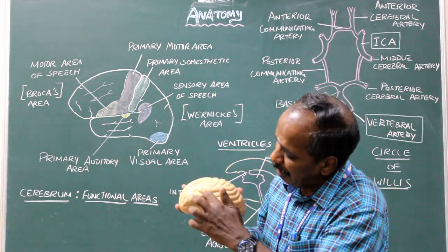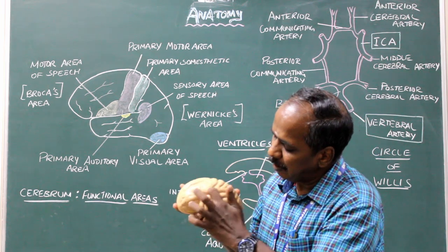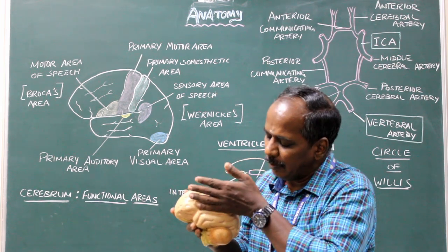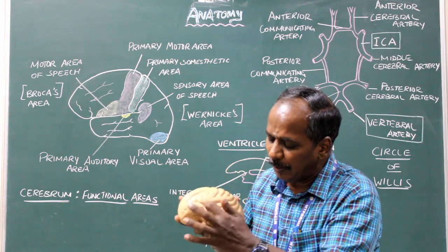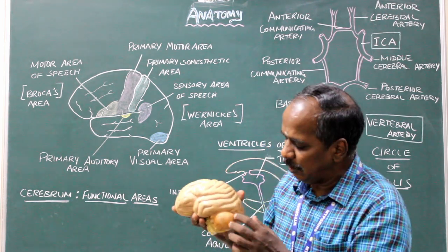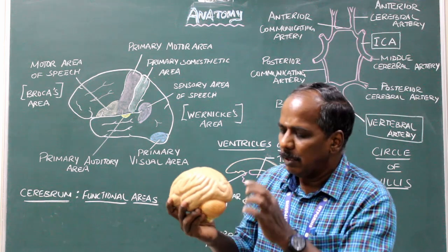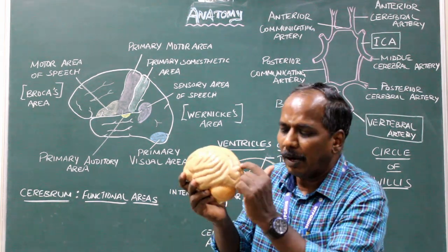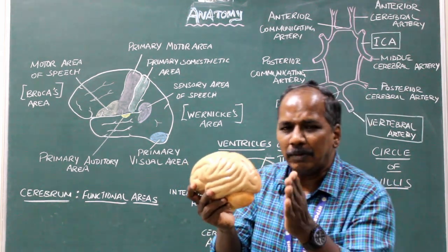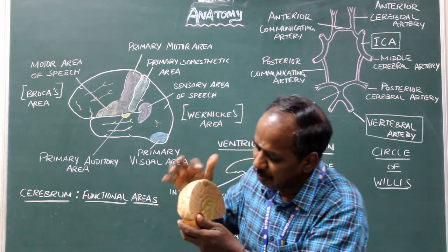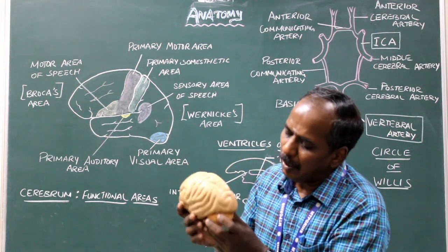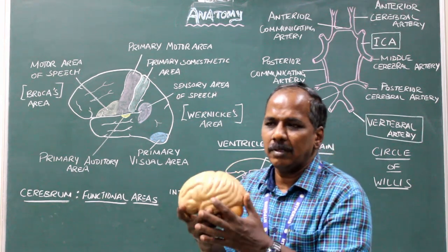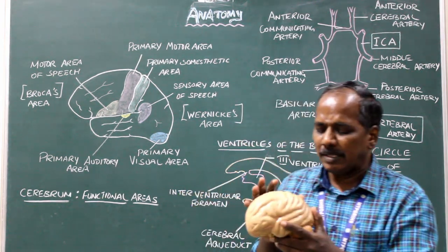The lateral sulcus divides the cerebrum into a lower part and an upper part. The third important sulcus is the parieto-occipital sulcus, which is very prominent on the medial surface, with a small part visible on the supero-lateral surface.